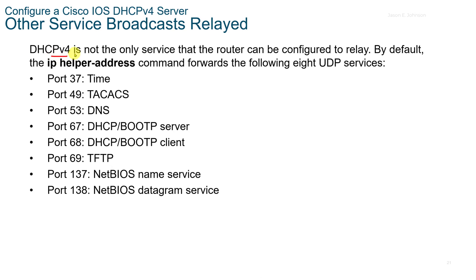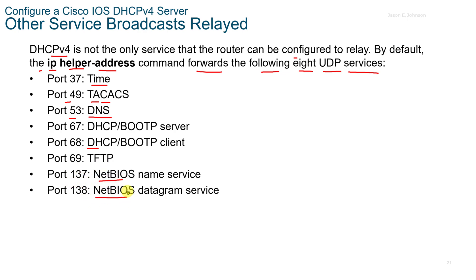DHCPv4 is not the only service the router can be configured to relay. By default, the 'ip helper-address' command forwards the following eight UDP services: port 37 for Time, port 49 for TACACS, port 53 for DNS, ports 67 and 68 for DHCP, port 69 for TFTP, port 137 for NetBIOS Name Service, and port 138 for NetBIOS Datagram Service.